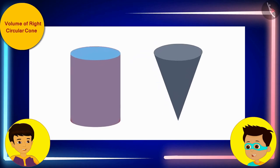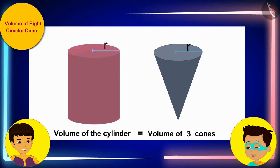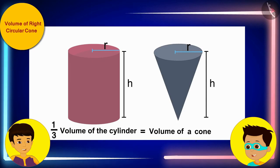So, we can conclude that the volume of three cones is equal to the volume of a cylinder. This means, if the radius of the base and the height of the cone and cylinder are the same, then the volume of the cone is one-third of the volume of the cylinder.